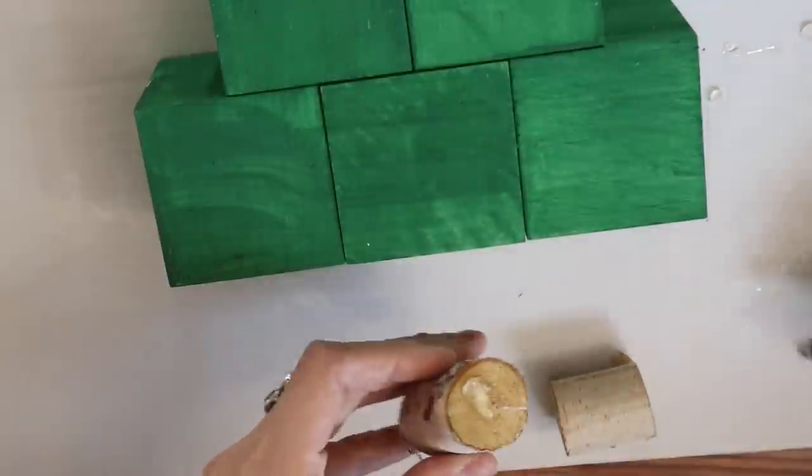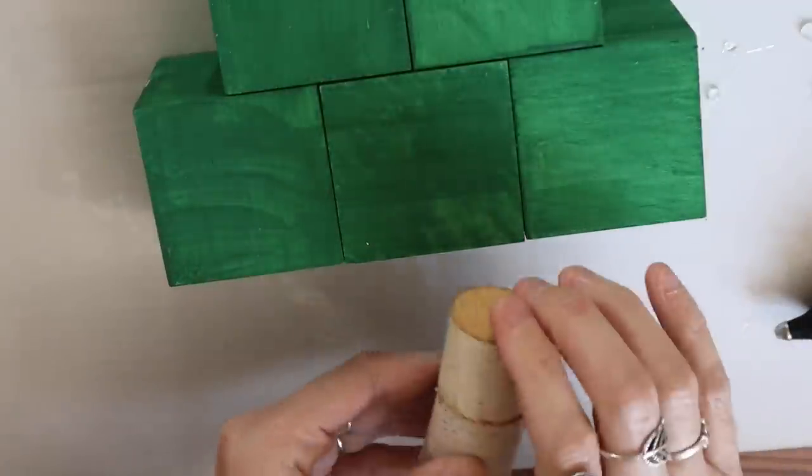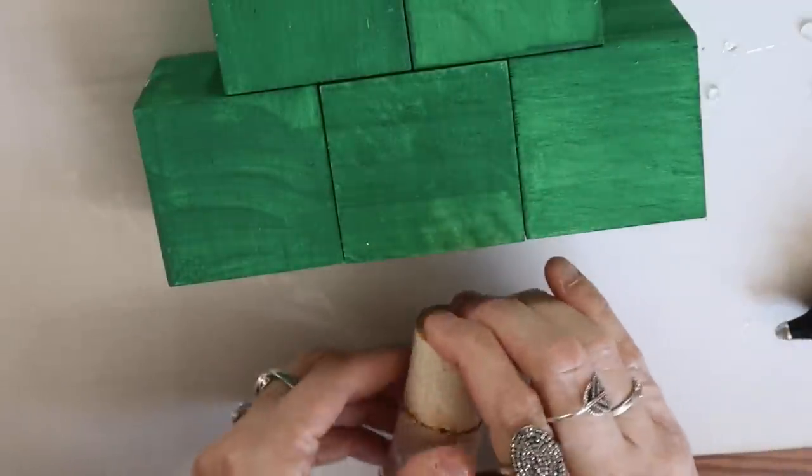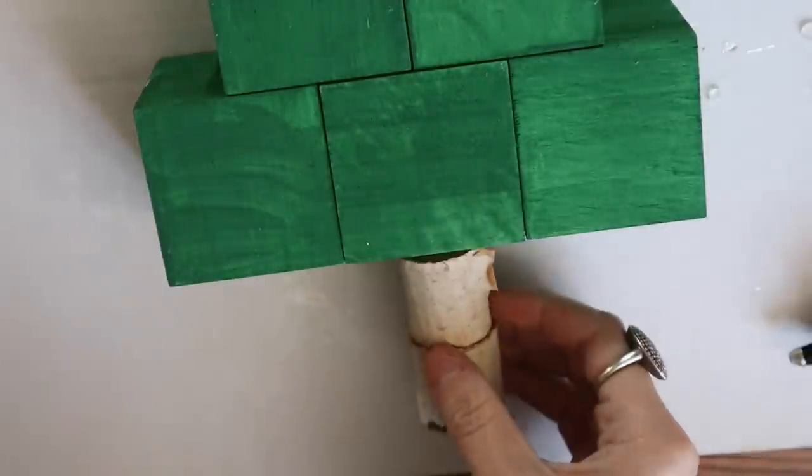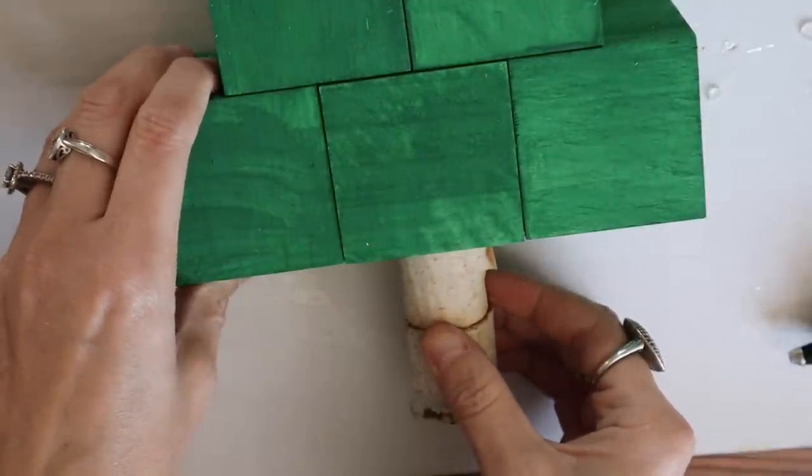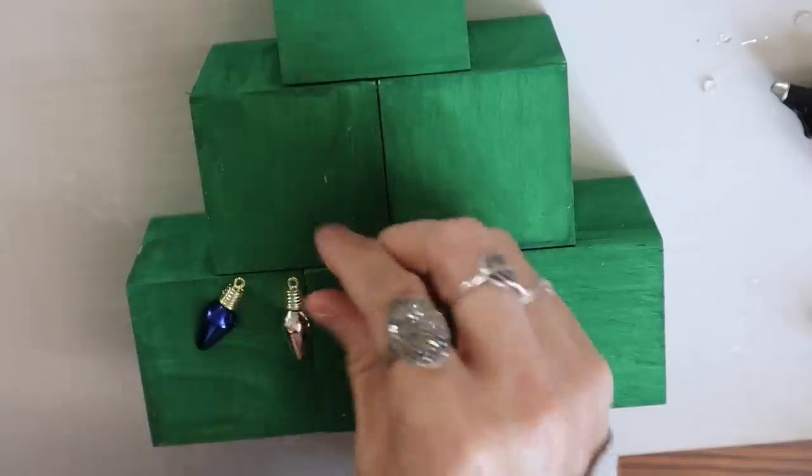So gluing it together, it's already looking like a tree using some of these wood pieces from Dollar Tree, these wood stems. Gluing two together, and that is going to be the stem. I think that is a perfect thing for any type of Christmas tree you decide to make around the holidays.